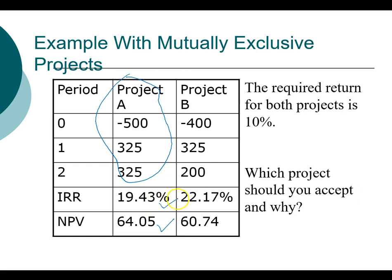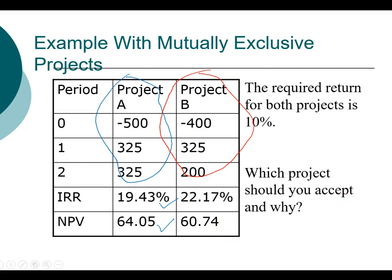I'm going to ask you to pause the video and do the calculation for project B — compute the net present value and the internal rate of return. Did you get 22.17% for IRR and $64.74 for net present value? Congratulations. Now let's take a look at how we will use this information.